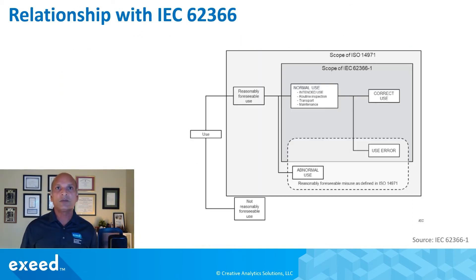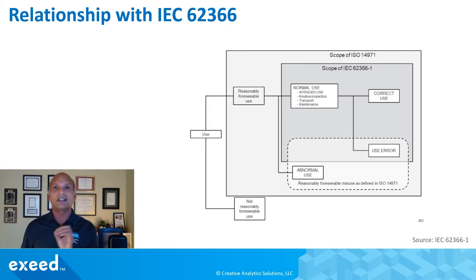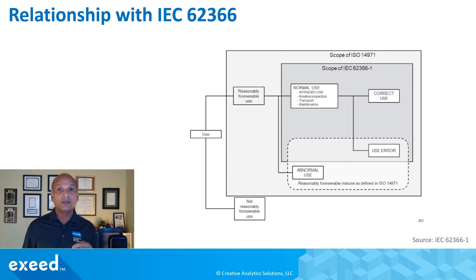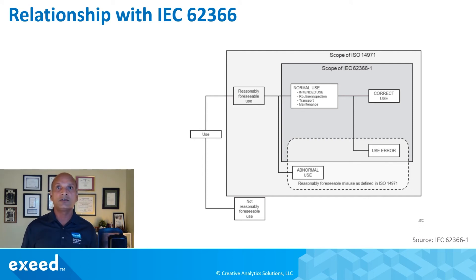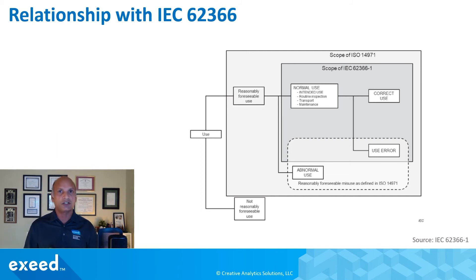Here's the relationship with IEC 62366 — a pretty insightful chart taken directly from the IEC standard. From an IEC point of view, they distinguish normal use and correct use from use error and abnormal use. Both use error and abnormal use are within the scope of ISO 14971. Abnormal use is an intentional, deliberate decision to use a device differently from what the manufacturer intends — for example, a surgeon using your product for a different indication. We need to clearly separate use error from abnormal use in our analysis.